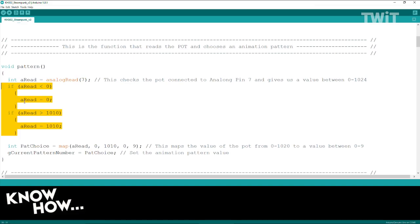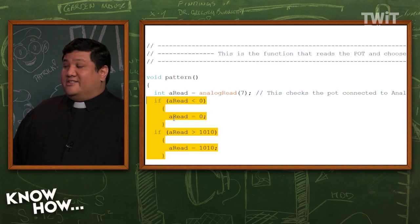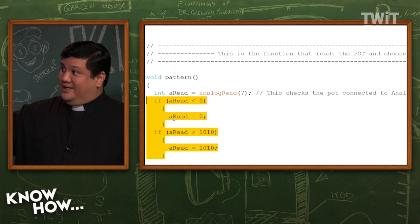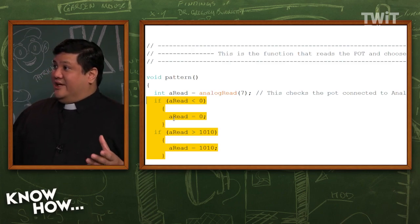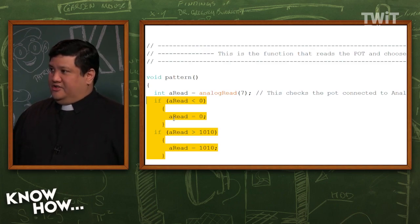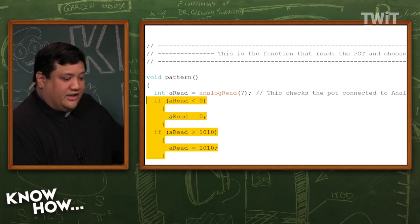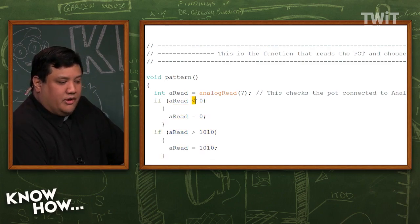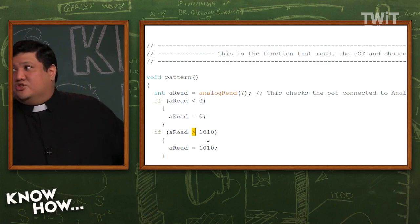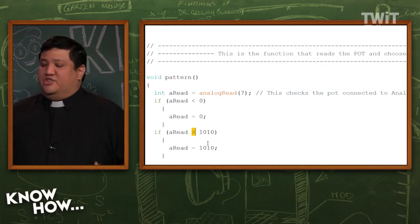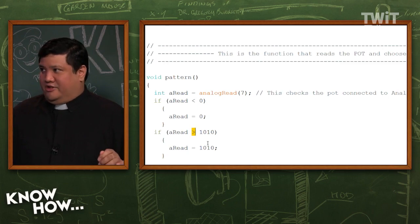We've added a range check — remember how we talked about how this is important? Because every once in a while, if you've got a flaky potentiometer, it will go down to less than zero and it will go above 1024, which we don't want, because if it's out of range, weird things happen — most likely the Arduino just freezes up. So what I've done is told it: if it goes below zero, set it back to zero; if it goes above 1010, set it to 1010. It is absolutely guaranteed it will not go out of range.